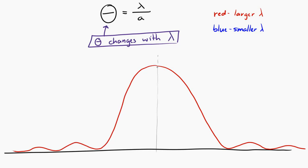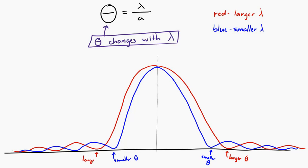For the blue light, well, blue light has a smaller wavelength, so it would have a smaller theta. So the central maximum, or excuse me, the first minimum would be closer in to the central maximum. And the red light has a larger wavelength, so it would have a larger value of theta, and that first minimum would be slightly further out from the central maximum.